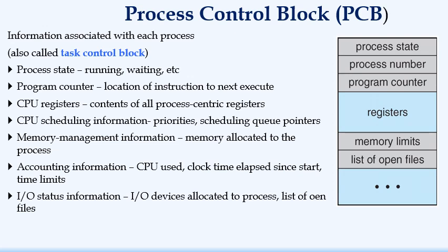Process control block is the data structure which will be associated with all the processes being created by the operating system. It contains important control information relevant to any particular process. The process state means what is the state of a process at any particular instant of time will be stored here in process state. Then process number.